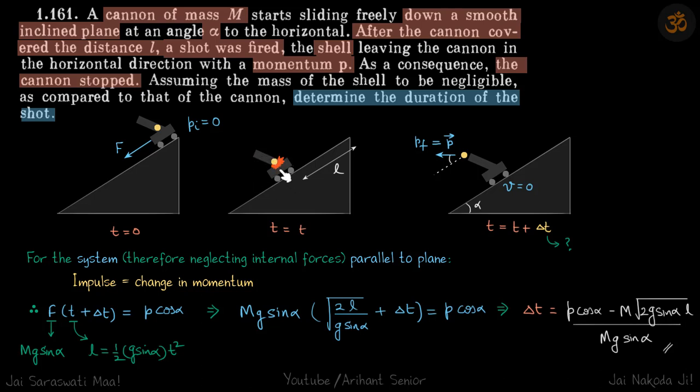Impulse is force times t plus delta t. We're considering from the beginning to when the shell exits. The mg sine alpha is applied to the system, so F times (t plus delta t) equals p cos alpha, because we're talking parallel to the plane. F is mg sine alpha. The length is given so we can find at what time the shell is fired using the standard equation: L equals half g sine alpha times t squared.